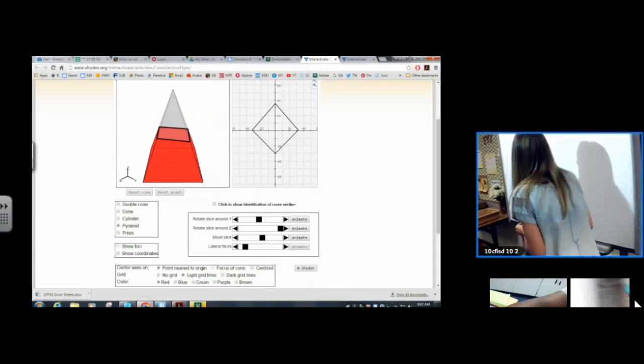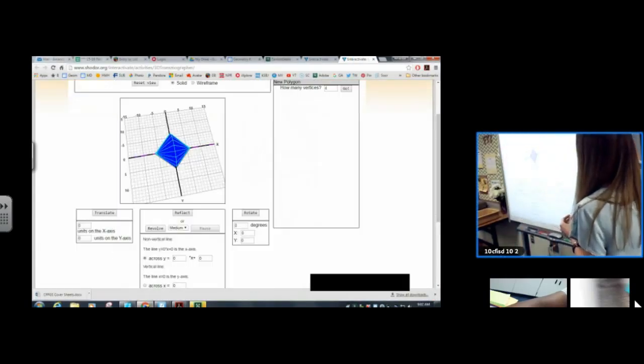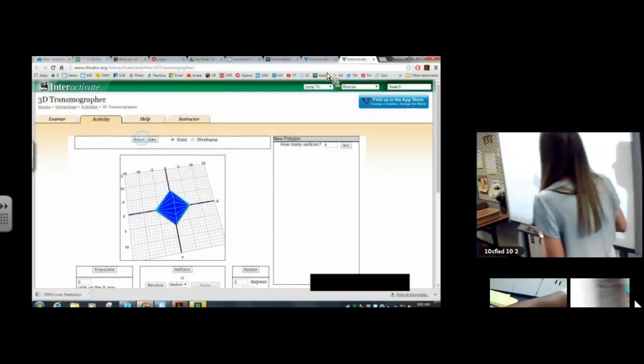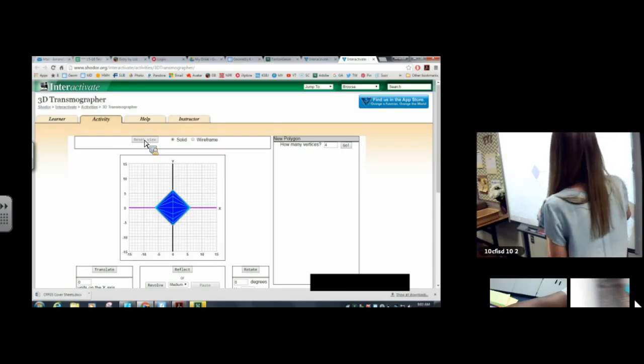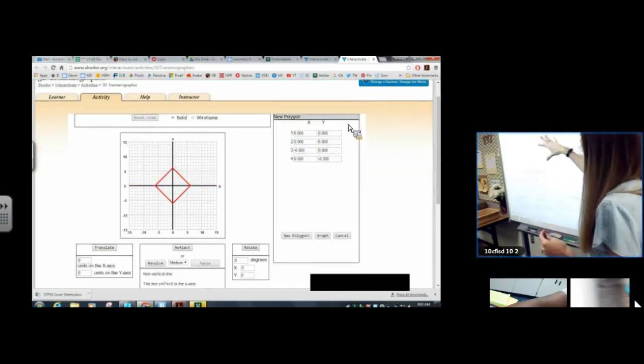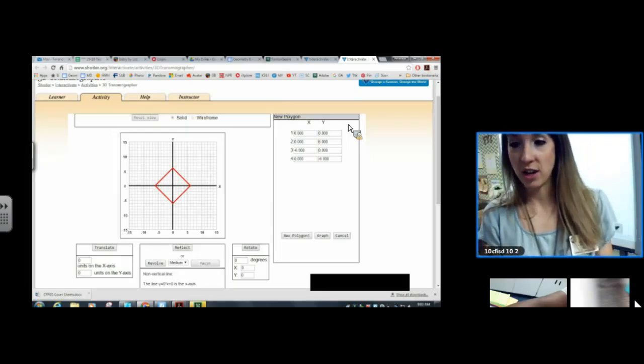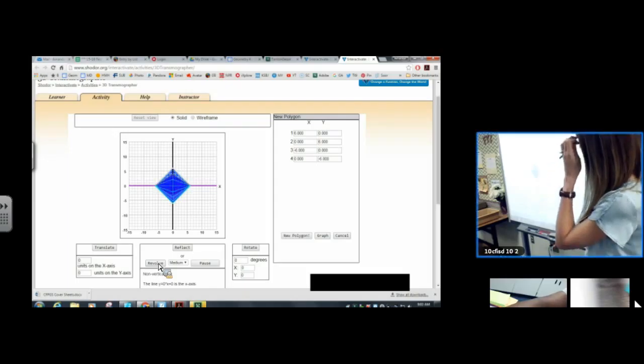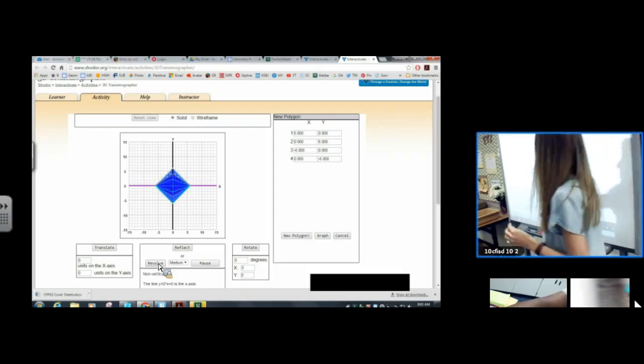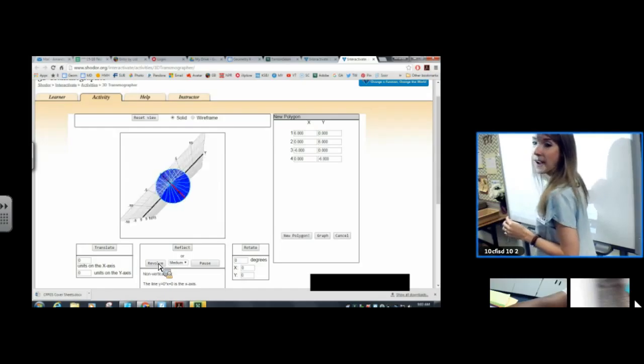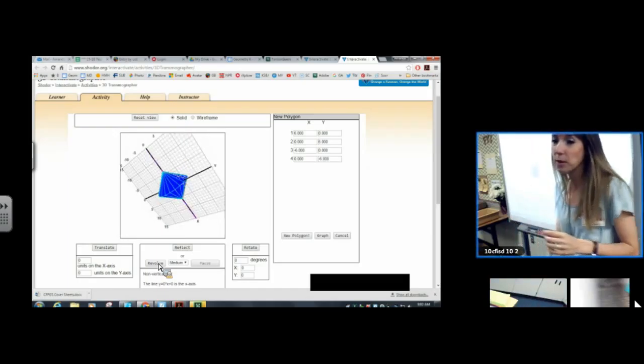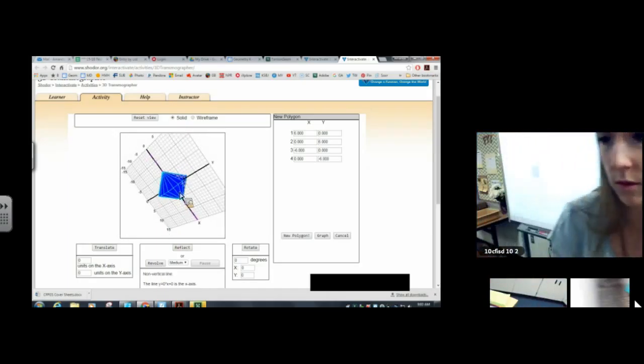This is the other website that you're going to hopefully have time to explore tonight. This one's pretty cool. Let me reset it. Anyways, you're going to plot a figure and then you're going to tell it to revolve. And it's going to create a 3D solid. And then you can touch the screen and you can drag it around and you can see what that 3D solid looks like from all different angles. So that is also a really dynamic, really cool website.